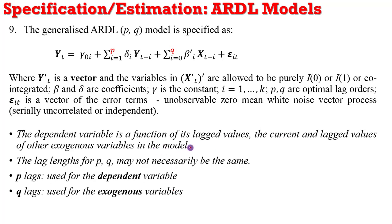Also note that the lag lengths P and Q may not necessarily be the same, unlike a VAR model where you have equal lags for all variables. Under ARDL, the P and Q may take different lag numbers. The P lags are used for the dependent variable, while the Q lags are used for the regressors.